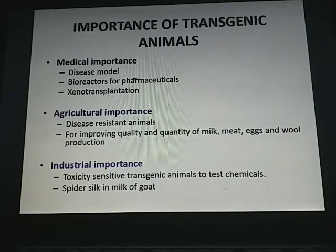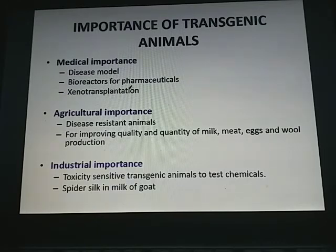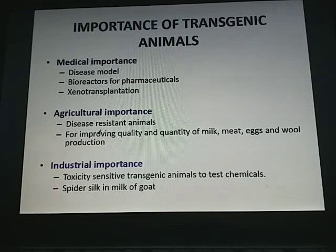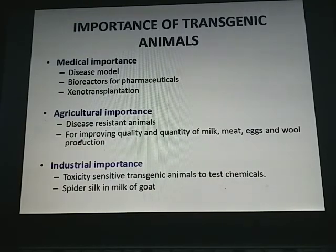The importance of transgenic animals spans several fields. Medically, they are used as disease models, as bioreactors for pharmaceuticals, and in xenotransplantations. In agriculture, they serve as disease-resistant animals, improving quality and quantity of milk, meat, eggs, and wool production. Industrially, they include toxicity-sensitive transgenic animals for testing chemicals, and goats that produce spider silk in their milk.